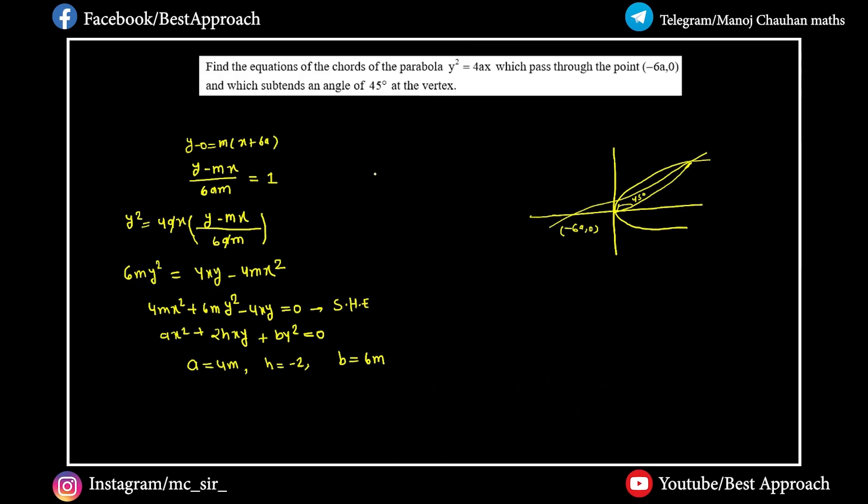So what is the formula for the angle? tan θ equals 2√(h²-ab) divided by (a+b). Here we have mod and we have to put values.